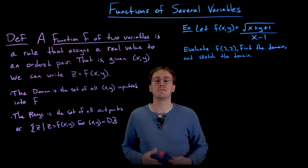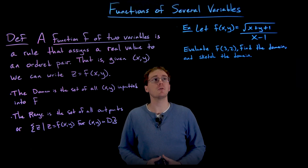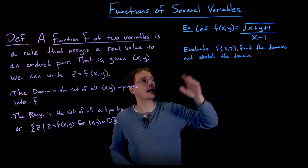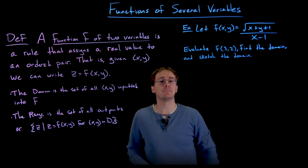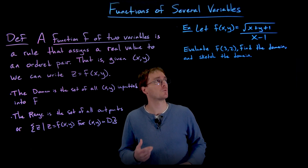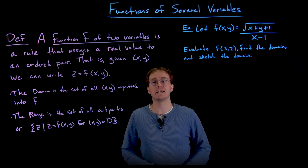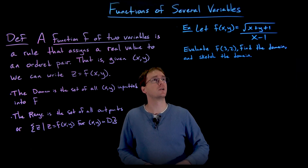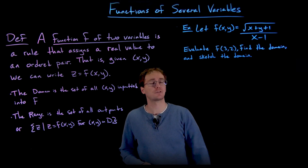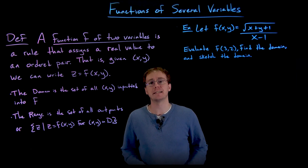Let's do a quick example to familiarize ourselves with functions of two variables. We're going to let f(x, y) be defined by the equation where the numerator is the square root of x plus y plus one, and the denominator is x minus one. We can also write this as z equals the square root of x plus y plus one, over x minus one. This is equivalent notation — just as we could swap y with f(x), now we can swap z with f(x, y).